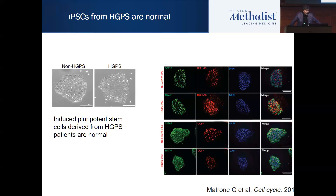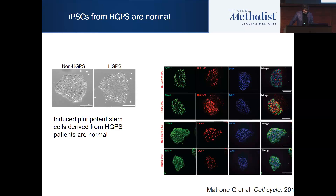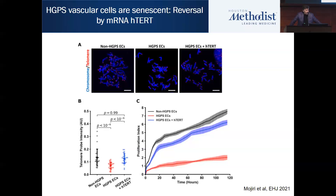We made iPSCs — induced pluripotent stem cells — from the children's fibroblasts using Yamanaka's technology, for which he won the Nobel Prize in 2012. Interestingly, the iPSCs from these children are fully normal and have telomerase activity, showing no signs of aging. But once you differentiate them into endothelial cells, these iPSC-derived endothelial cells are very abnormal. We also generated iPSC-derived endothelial cells from the parents — who don't carry the mutation, since it's spontaneous — as a good control.